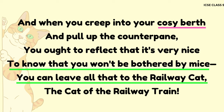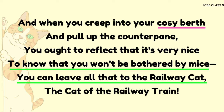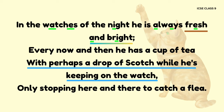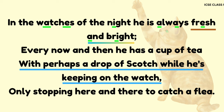And when you creep into your cozy berth and pull up the counterpane, you ought to reflect that it's very nice to know that you won't be bothered by mice. You can leave all that to the railway cat, the cat of the railway train. In line 44, the phrase 'cozy berth' gives visual description and is therefore an example of visual imagery. Line 47, 'to know that you won't be bothered by mice,' is an example of irony, since throughout the poem we have come to know about the cleanliness of the Nightmail train. Line 48, 'you can leave all that to the railway cat,' is an example of hyperbole, using exaggeration to emphasize Skimble Shanks' capabilities as the supervisor of the train.